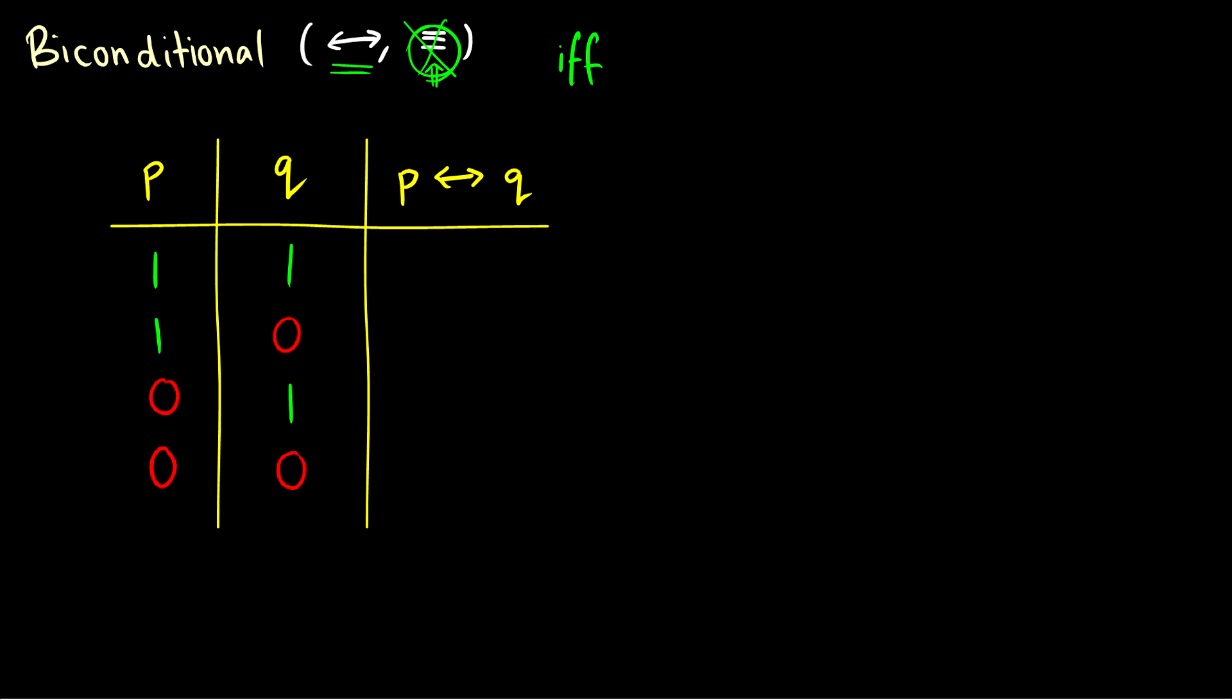And the way p IFF q works is: if p is equal to q, then we have that p double arrow q is equal to one. So if they're the same value, it outputs a one. So when p and q are both true, the biconditional is true, and when p and q are both false, the biconditional is true. If the values are separate or different from each other, then it's false. So in the second row, p is one and q is zero, therefore it outputs a zero. If p is zero and q is one, it outputs a zero because the values aren't the same. That's the biconditional.